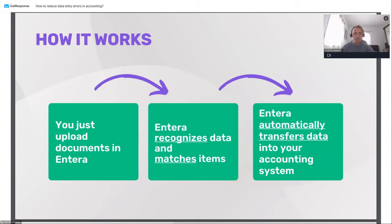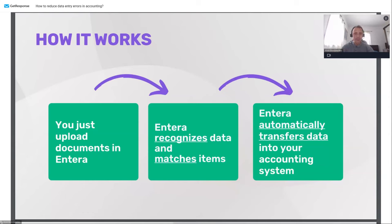We propose a cloud service based on AI and OCR technology for automated data entry, data collecting, and data storing. On the slide you can see a diagram with relevant steps. The first step is uploading documents from different sources. The second step: Entera captures the data, recognizes it, classifies each document, and performs multiple validations to check correctness. Entera is synchronized with your accounting software and provides matching for items, categories, transaction types, and your supplier list. The last step: Entera provides seamless integration with your accounting software — for example, Tally — and also has out-of-the-box integration with Zoho and QuickBooks Online.